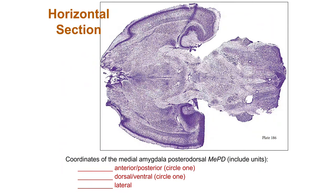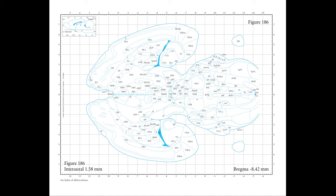Now try one more on a horizontal section — find the medial amygdala posterodorsal nucleus, abbreviated MEPD. It's a dense collection of cresyl-stained neurons. Pause the video and make sure you can do this on your own before seeing the answer, as it will be on the exam. The bregma coordinate system tells us we're at negative 8.42 mm ventral — that's given on the slice — and then about 3.5 mm posterior and approximately 3.4 mm lateral.